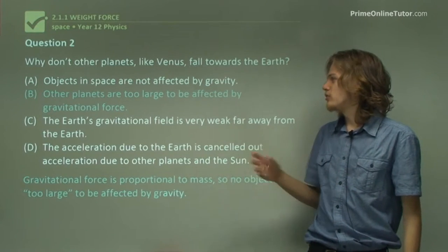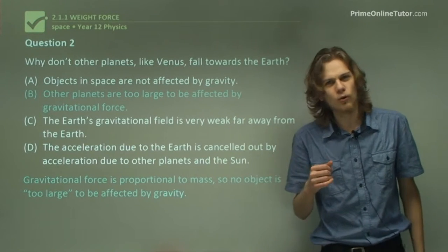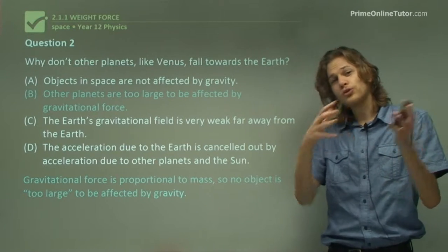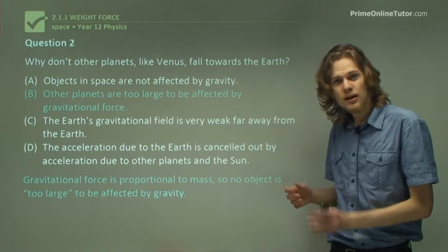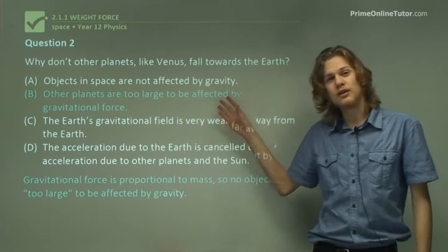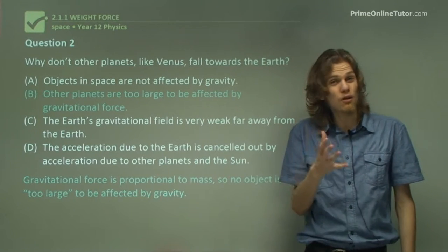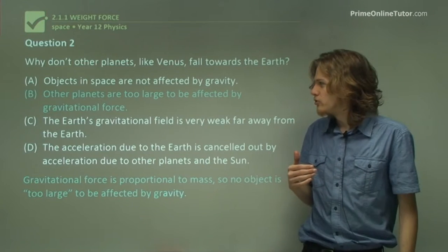B says that the other planets are too large to be affected by gravitational force. But we know that the force on an object, due to gravity, is proportional to its mass. So that means that for very, very heavy objects like a planet, the gravitational force would be stronger, right? So it's not B.